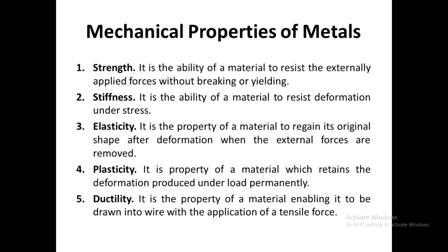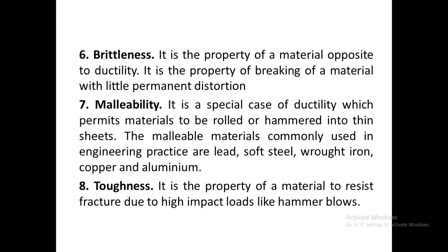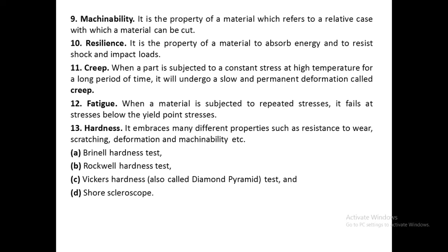Ductility is the ability of a material to be drawn into wires when an external force is applied. Brittleness is the opposite of ductility — the property of a material to break with little external force. Malleability is similar to ductility but refers to the ability to be rolled or hammered into thin sheets. Toughness is the property of a material to resist fracture due to impact or external force. Machinability is the ability of a material to be cut. Resilience is the property of a material to absorb energy, resist shock, and absorb external load.